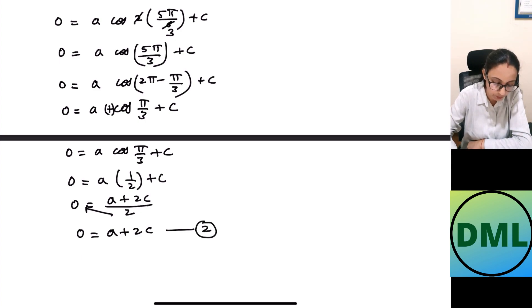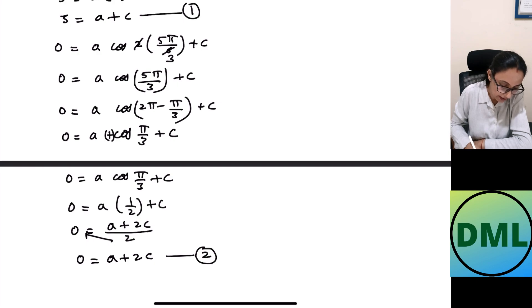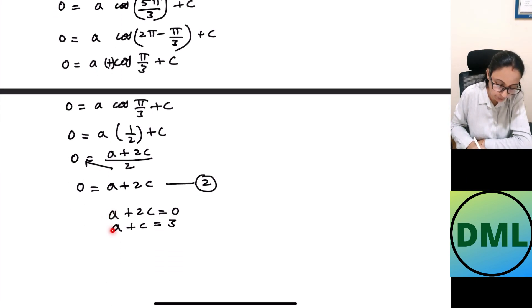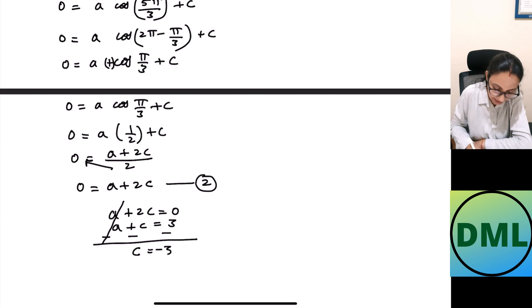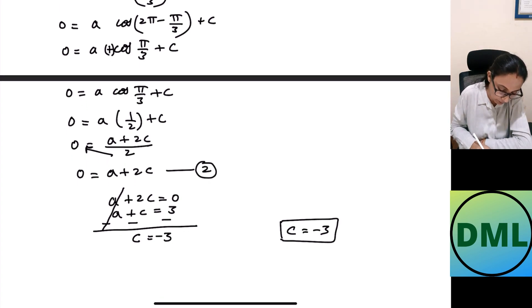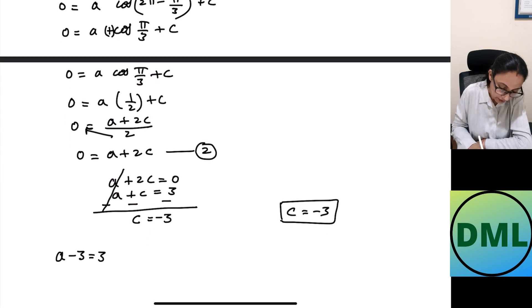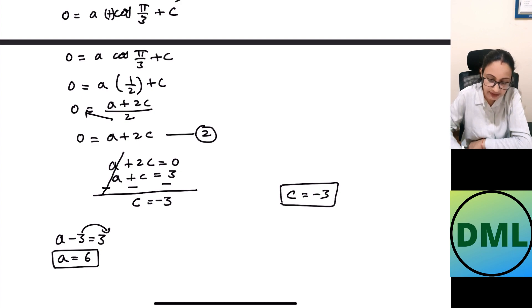Solving equations 1 and 2 simultaneously: a plus 2c equals 0 and a plus c equals 3. Subtracting the second from the first, a cancels out and 2c minus c equals 0 minus 3, so c equals minus 3. Substituting c equals minus 3 into equation 1: a minus 3 equals 3, so a equals 6. Therefore a equals 6, c equals minus 3, and b equals 2.